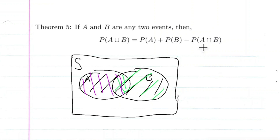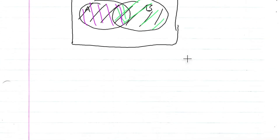When I add the probability of A and the probability of B, I'm adding the area of A intersection B twice. So the probability of A union B would be P(A) plus P(B), and then I have to subtract one of the A intersection B's. Intuitively, it makes sense why P(A∪B) = P(A) + P(B) - P(A∩B).